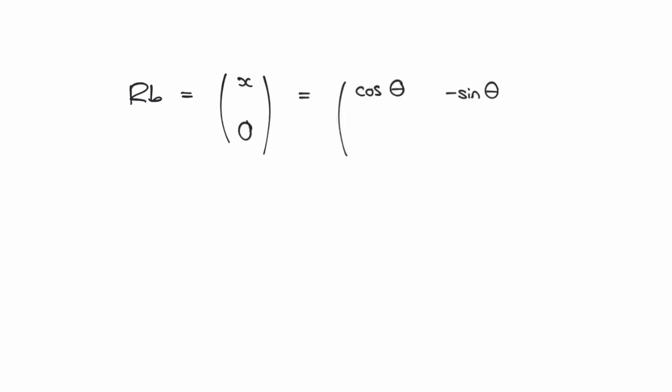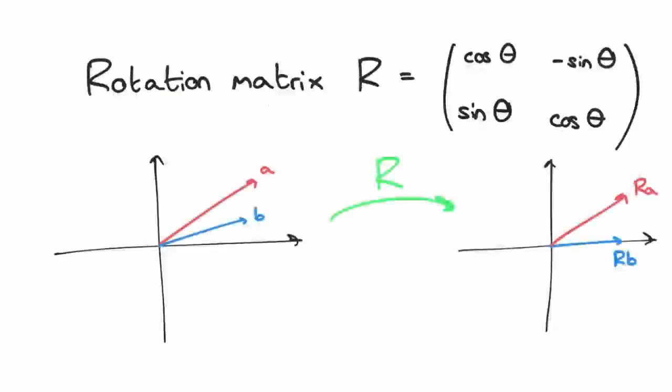We can write out the full equation like this. Now, here's a cool trick. Instead of rotating B to get the horizontal vector Rb, we could do the inverse rotation with the horizontal vector to get back to B.